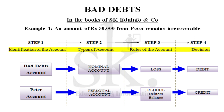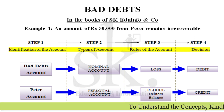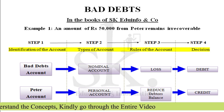We identify two account heads: bad debt account and Peter's personal account. Bad debt account is a nominal account — it is a loss because you are not receiving money you were supposed to get. Since it is a loss, it is debited. Peter, as a debtor, was debited because debtors represent an asset. To reduce the debtor's balance, we credit Peter's account. Therefore, bad debt account being a loss is debited, and Peter's account being a debtor with a decrease in asset value is credited.